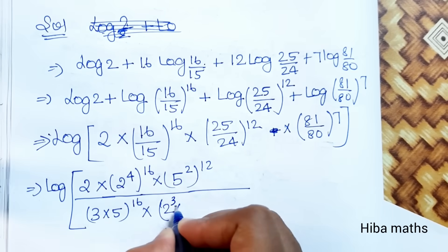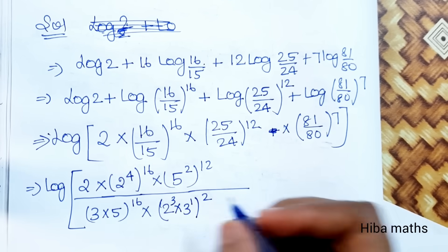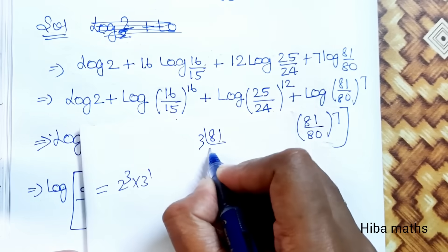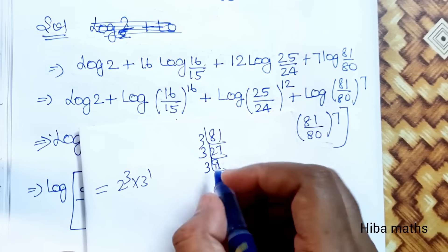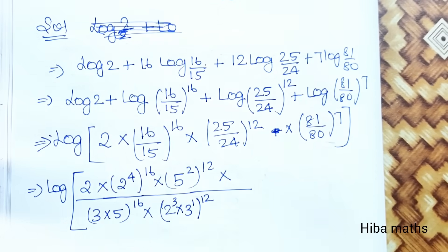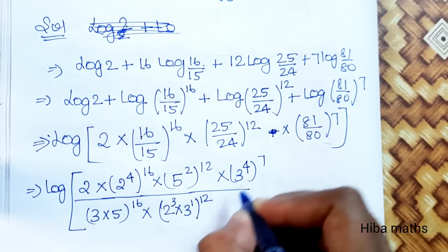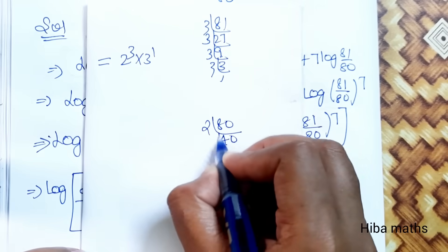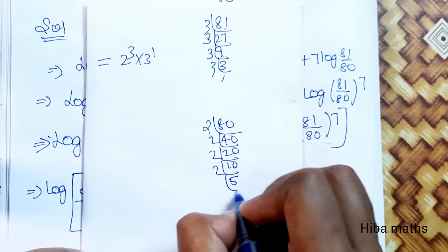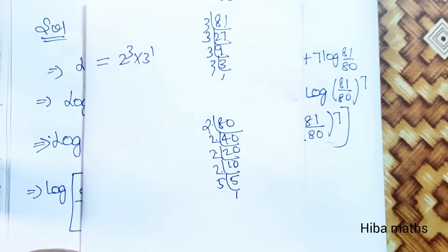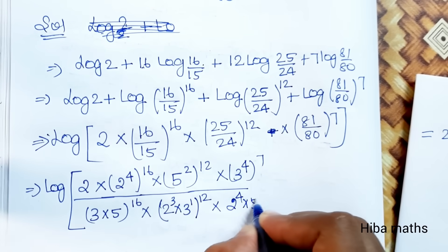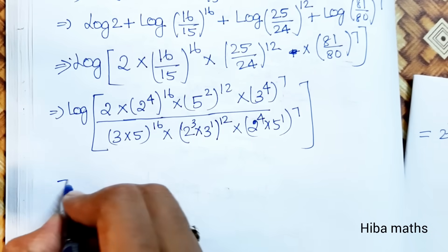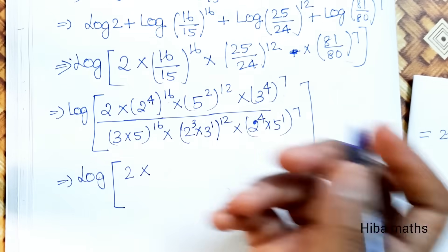Continuing: (2 power 3 × 3 power 1) whole power 12. For 81: 3 × 3 × 3 × 3 = 3 power 4. For 80: prime factorization gives 2 power 4 × 5 power 1. So (81/80) = (3 power 4) / (2 power 4 × 5 power 1), whole power 7. Now multiply and simplify: 2 into 2 power 4 gives 2 power 64, into 5 power 12.